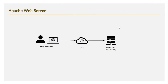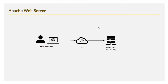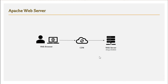Before talking about the dispatcher, we must first talk about the web server. Whenever the client — in this case a web browser — requests a web page, the request first goes to a CDN (Content Delivery Network). CDNs are available worldwide; content gets cached there and it tries to serve static HTML pages from the CDN. If the CDN cannot serve the page, the request is passed on to the Apache web server.